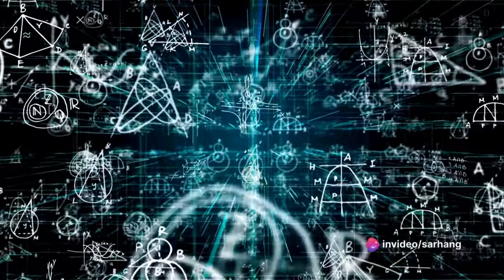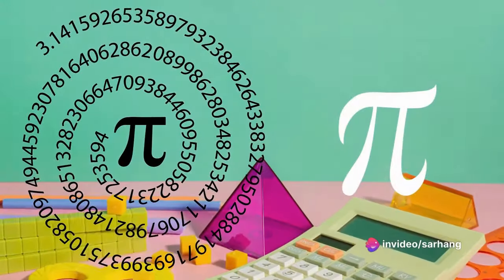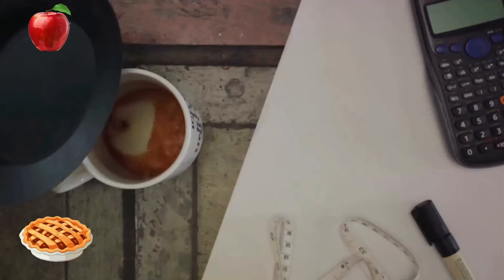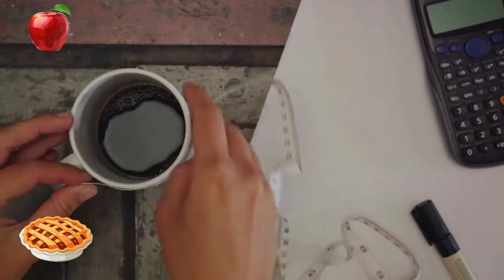Get ready to have your mind blown. Pie is an irrational number, which means that it has an infinite number of non-repeating digits. We can find pie by measuring the circumference and diameter of a circle.